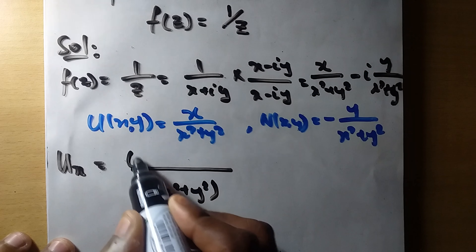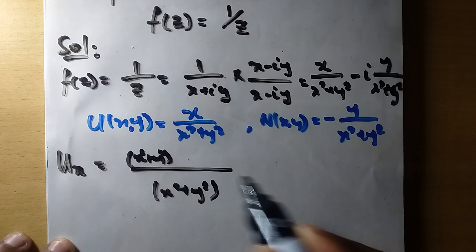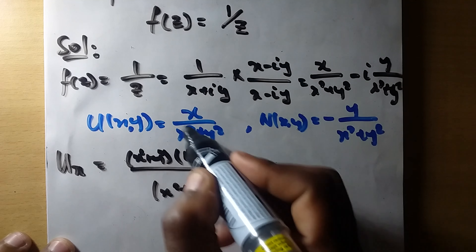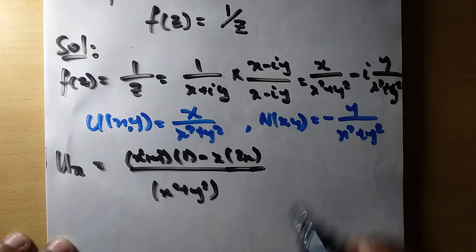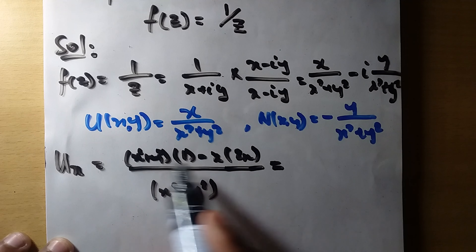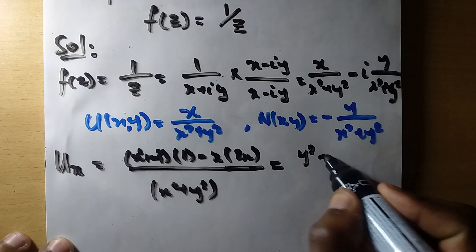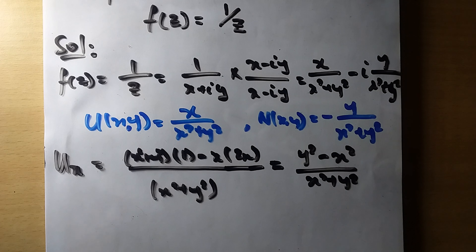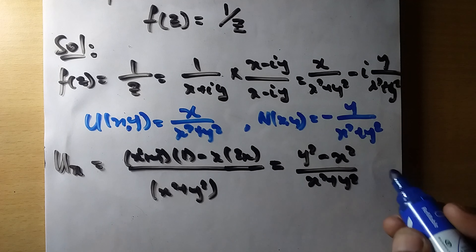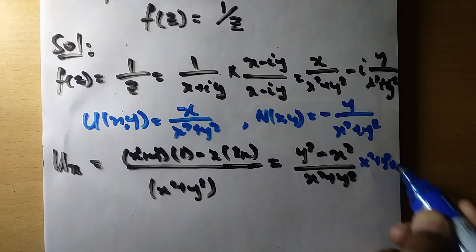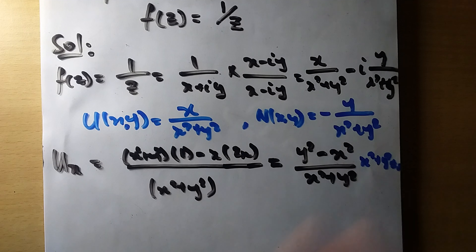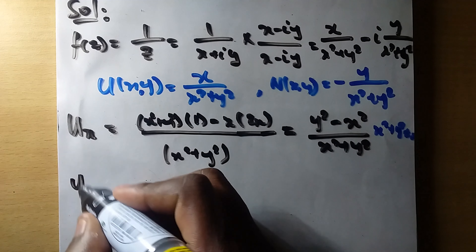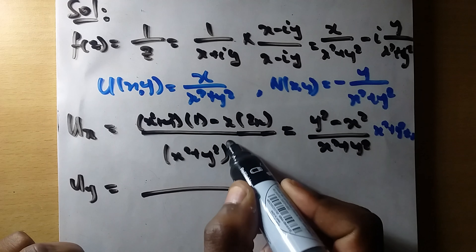Now we're going to look for our partial derivatives. Let us find u_x first. This one is going to be a bit tricky, so we'll use the quotient rule. The denominator is (x² + y²)², the derivative of the numerator x with respect to x is 1, minus x times the derivative of (x² + y²) with respect to x, which is 2x. This gives us (y² − x²) divided by (x² + y²)², with the condition that x² + y² ≠ 0.